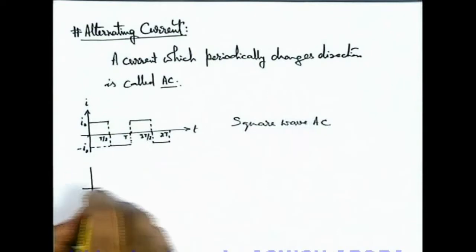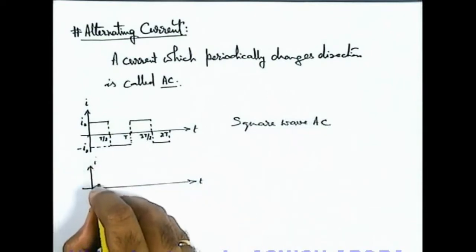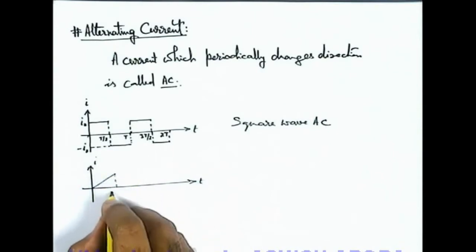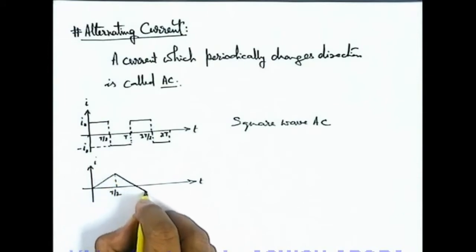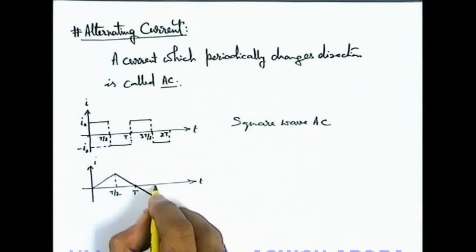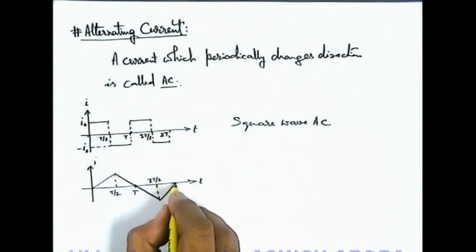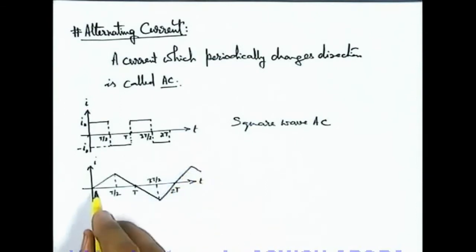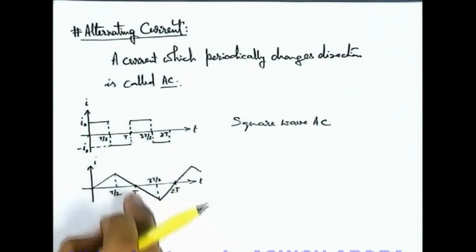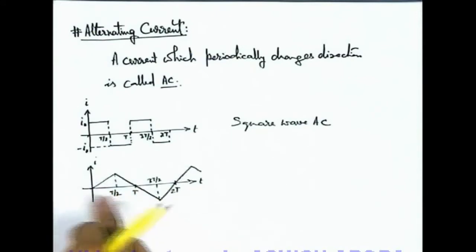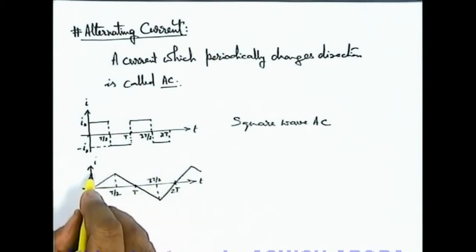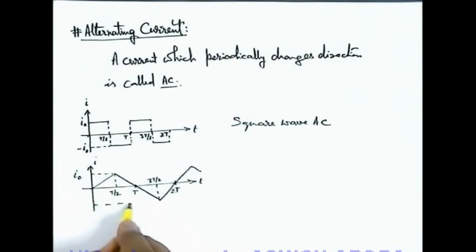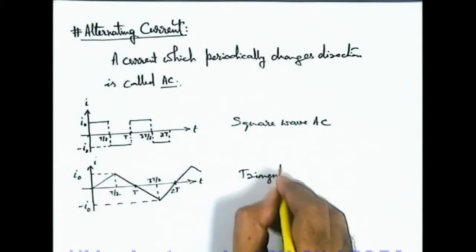Similarly, another kind of alternating current: if current linearly increases with time up to t/2, then decreases up to time t, then up to 3t/2, and then up to 2t the cycle is repeated. This is again an alternating current with cycle period 2t. Here half cycle lasts for time t, and t/2 is the quarter cycle of this alternating current, as the current oscillates between I₀ and minus I₀. Due to the shape of the waveform, this is termed triangular wave AC.